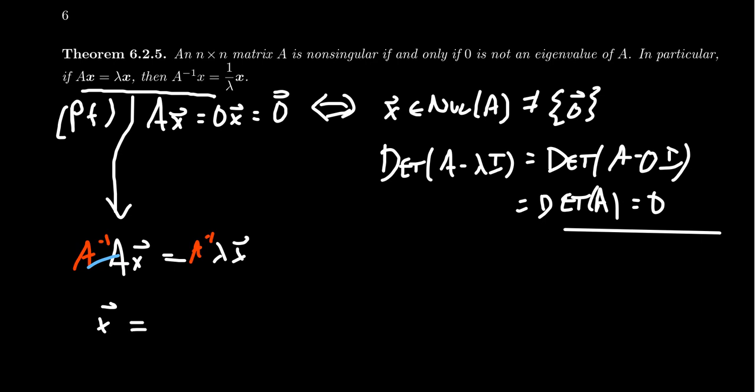On the right-hand side, because lambda is a scalar, you can factor it out of matrix multiplication. So you get lambda times A inverse X. And since we know that lambda is not 0, because non-singular matrices do not have 0 eigenvalues, you can divide both sides by lambda.